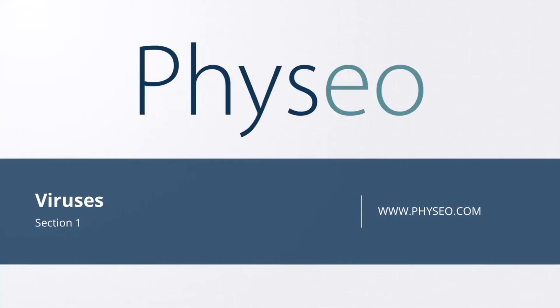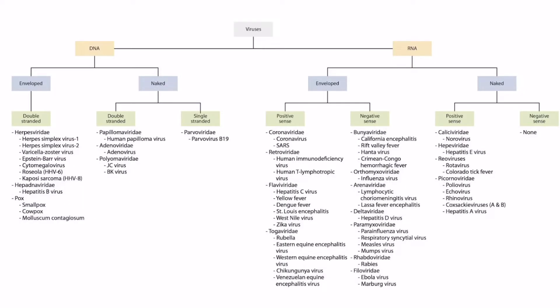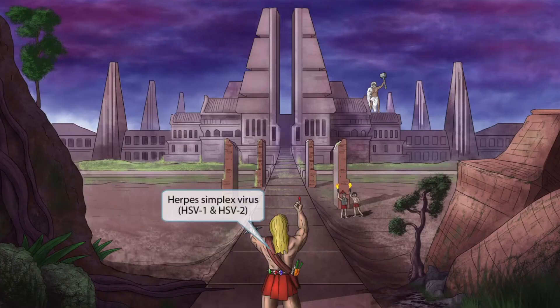Welcome to section 1 of viruses. This is our virus overview figure, and in this video we'll be discussing herpes simplex virus 1 and herpes simplex virus 2. For simplicity I'll refer to these as HSV1 and HSV2. These are kind of a beast, but super high yield for step 1. This story is all about an epic battle between Hercules and Zeus. Hercules sounds like herpes, which should help you remember that this image is all about herpes simplex virus, or HSV.